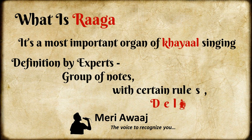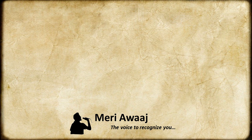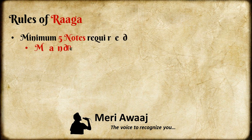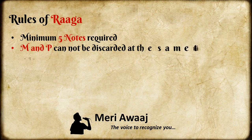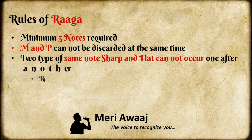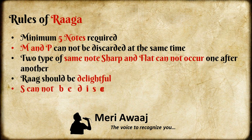The rules of ragas are as follows: A raag should have a minimum of 5 notes. In a raag, Ma or Pa notes cannot be discarded at the same time. The two types of the same notes — sharp and flat — do not occur one after another in a raag. A raag normally is delightful by itself. Shadach or Sa cannot be discarded in a raag.